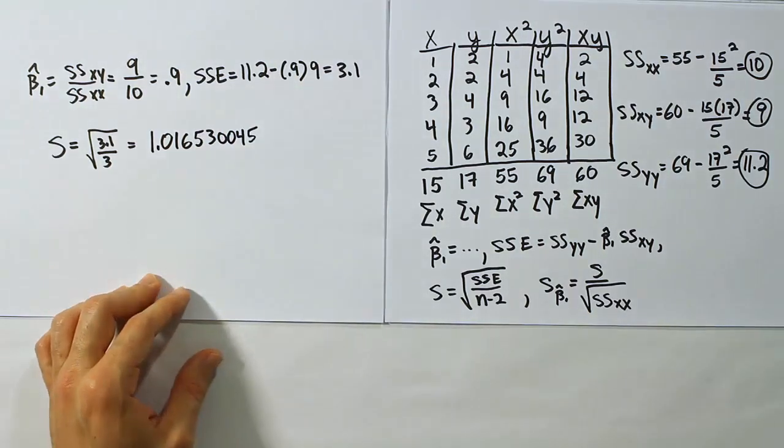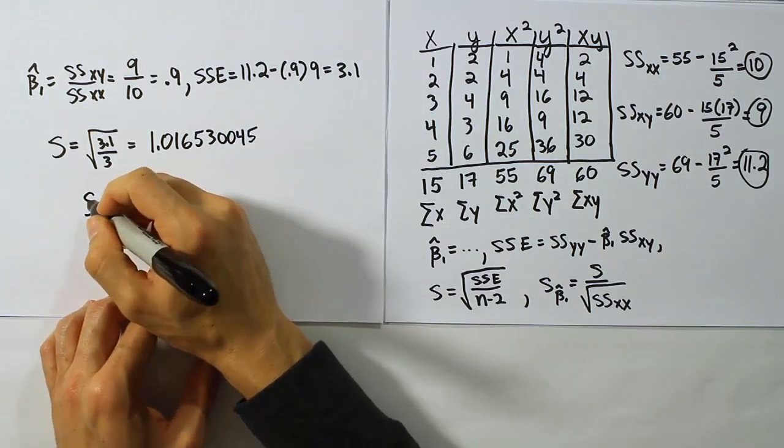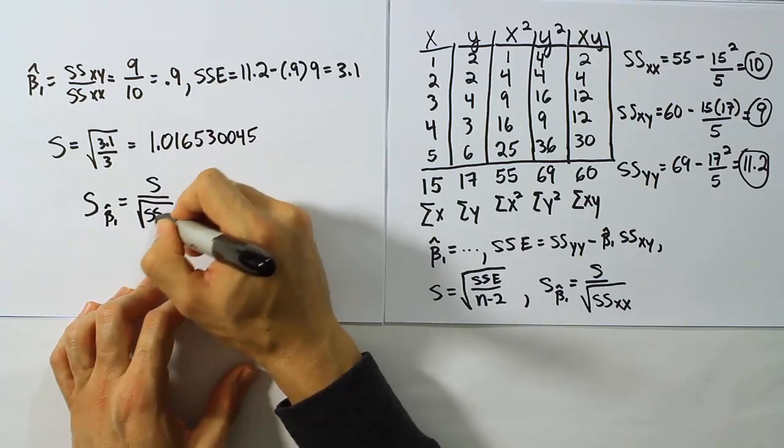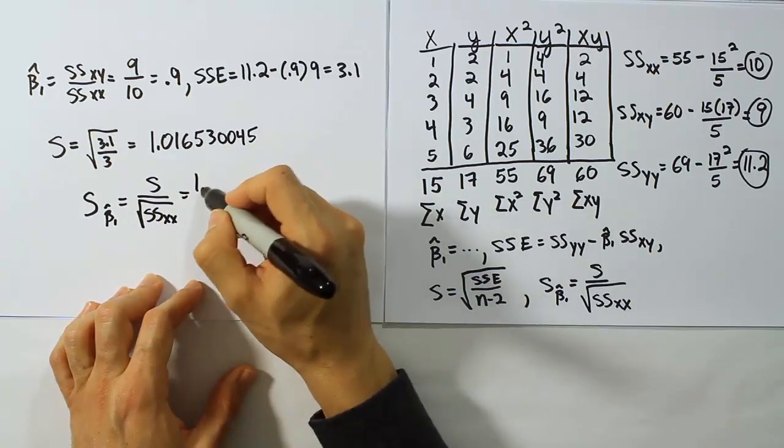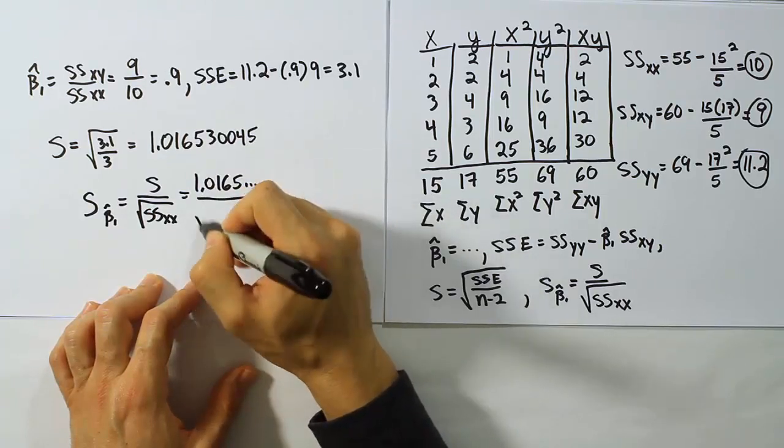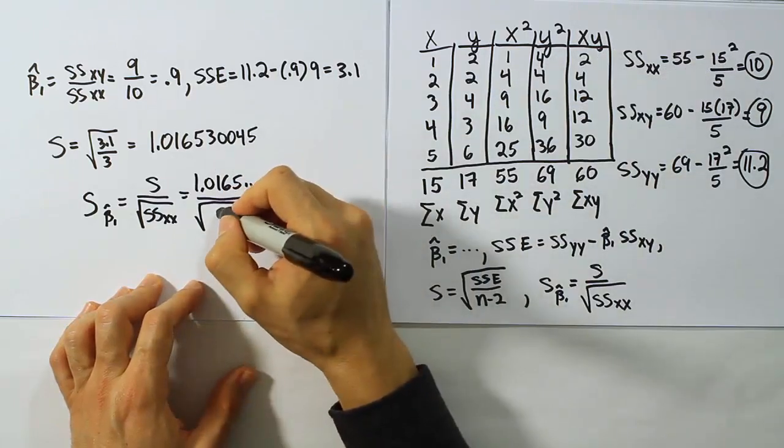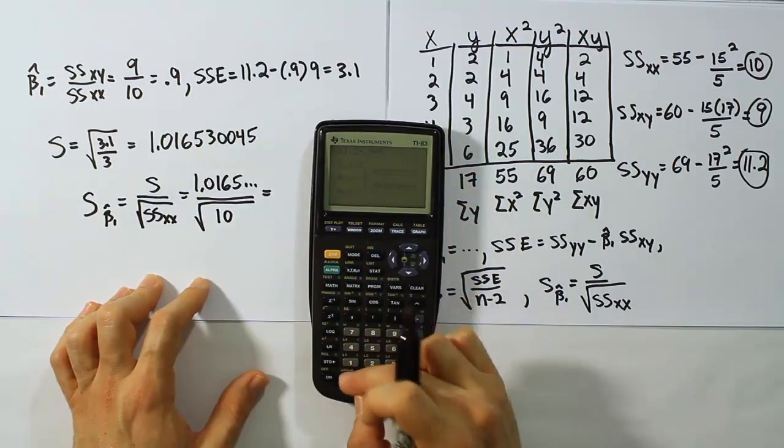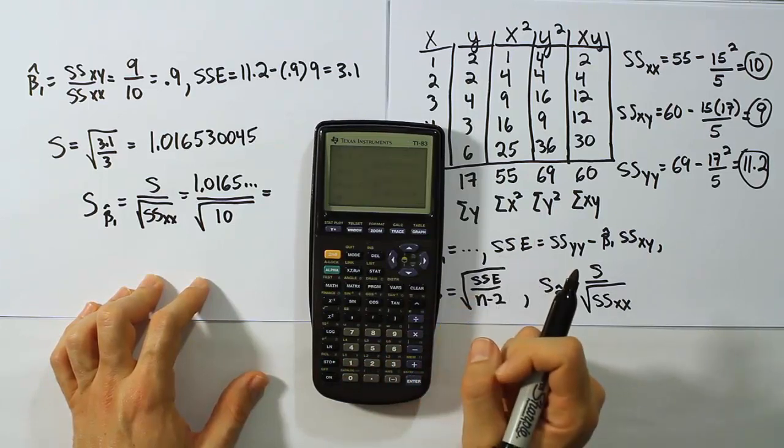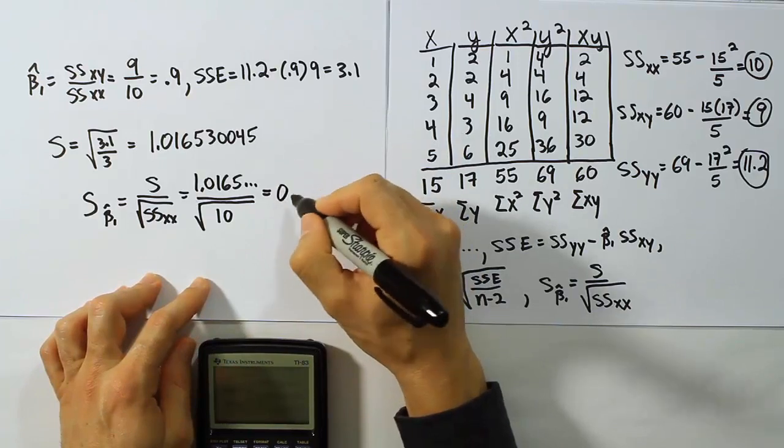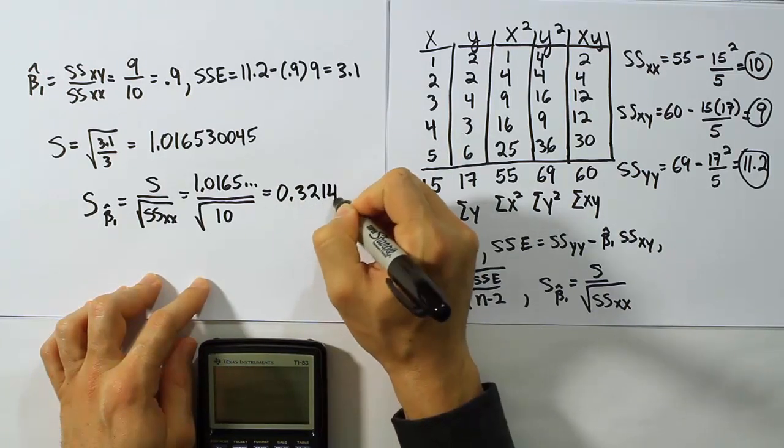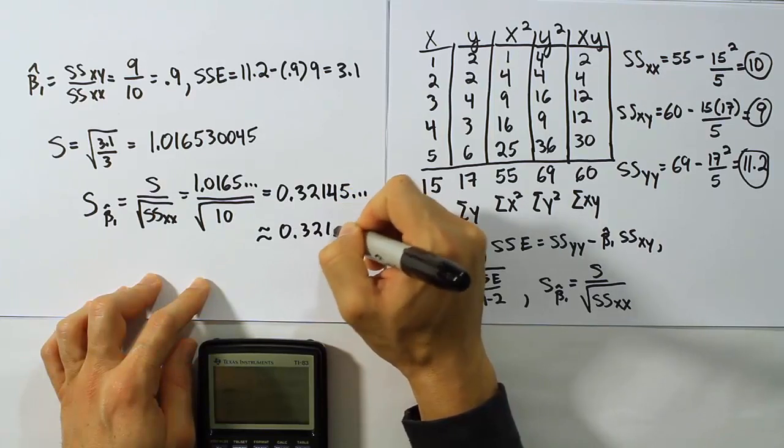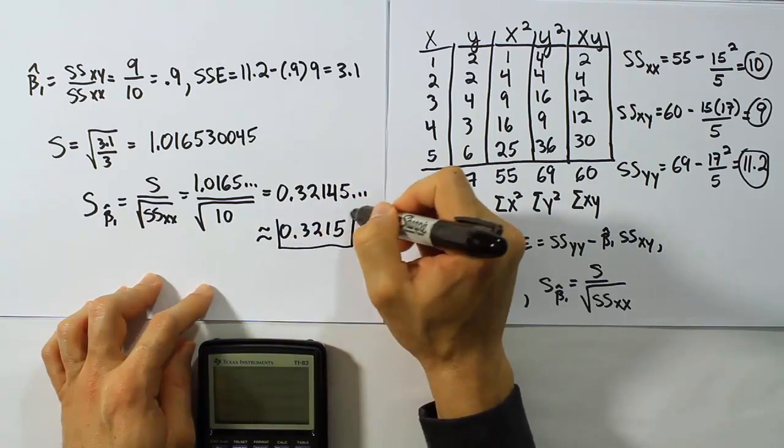So, I'll just keep that in my calculator for the next calculation, which is our answer to this problem. In order to get the standard error for beta 1 hat, we finish it by doing s over the square root of SSxx. Now, s is 1.0165 divided by the square root of the value we had there, which was just 10. I still have that number in my calculator, so I'm just going to hit divide by the square root of 10 to finish it up. And we get the answer 0.32145. If you want to round it off, we'll just say 0.03215. So that's our solution to the problem, and we're done.